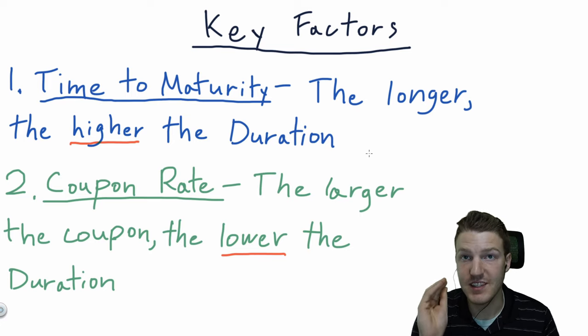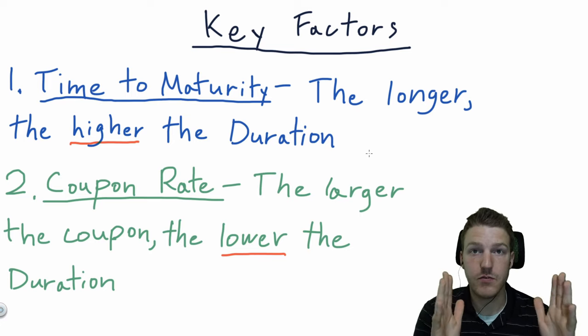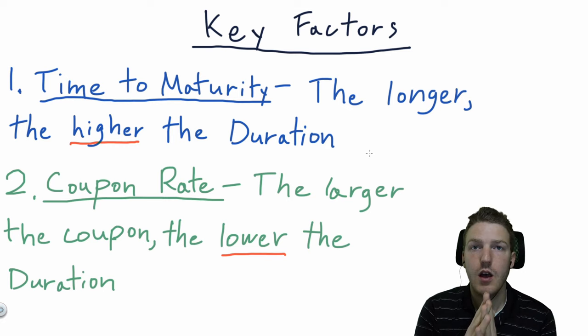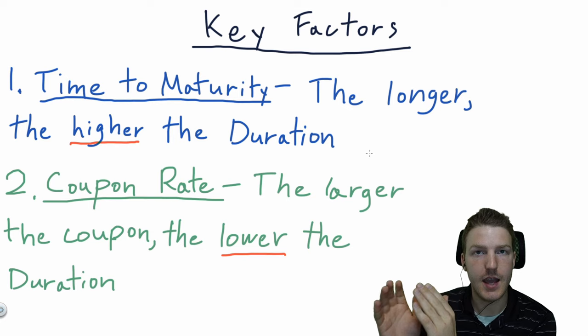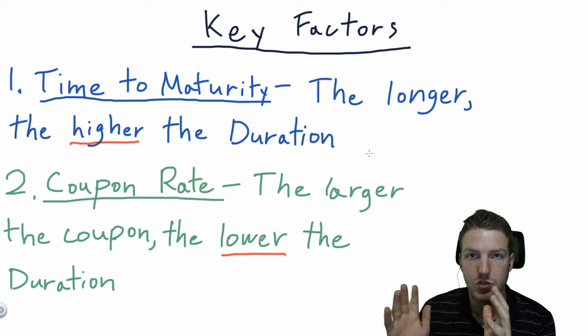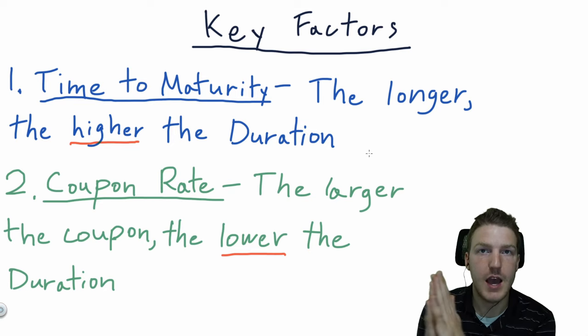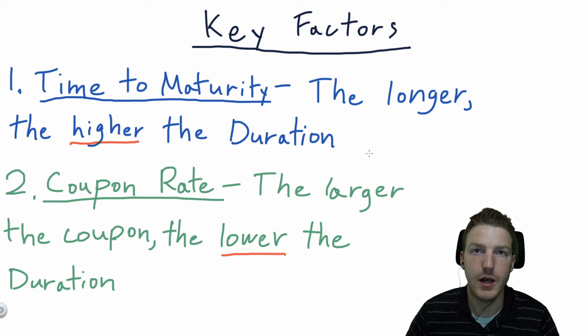Now think about a zero coupon bond. If you receive no coupons, all of the payment of that bond will happen at the very end at maturity, which means that the duration is equal to the time to maturity. So the highest duration you can have is when all of the cash flows are at the end of the investment, like a zero coupon bond.